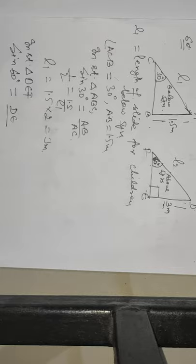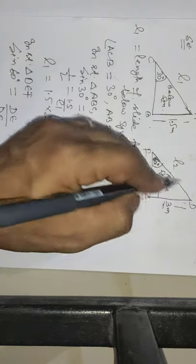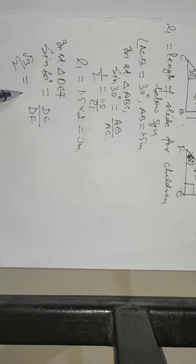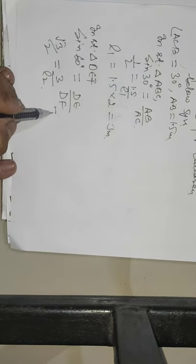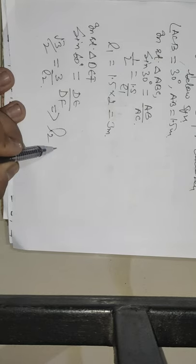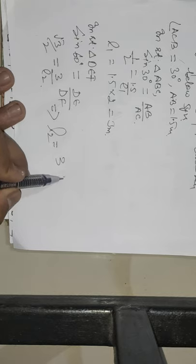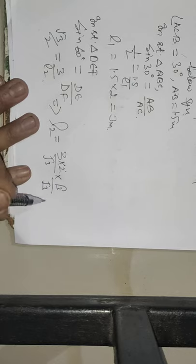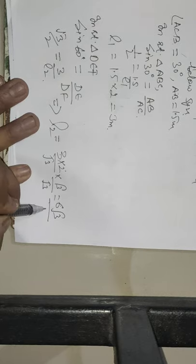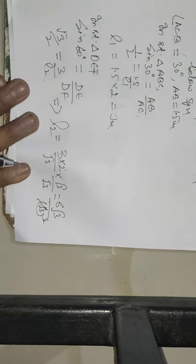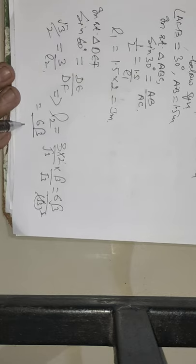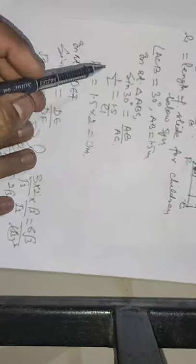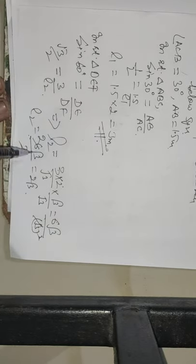In right triangle DEF, sine of 60 degrees equals DE upon DF. Perpendicular upon hypotenuse is root 3 by 2. DE is 3 and DF is L2. So root 3 by 2 equals 3 upon L2. L2 equals 3 times 2 upon root 3. Rationalizing, we get 6 root 3 upon 3, which equals 2 root 3 meters.